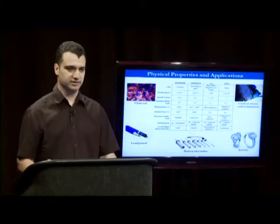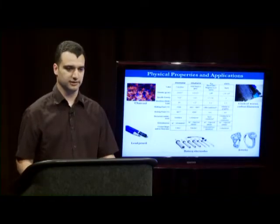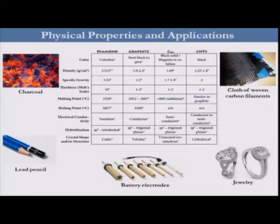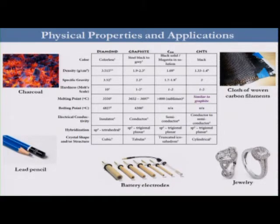Carbon is important not only because of its abundance in our daily life and in our solar system, but also because of its properties. It covers a very large number of interesting properties like density and hardness. That's why we can see carbon in many small devices and materials we use every day, from lead pencils up to battery electrodes.